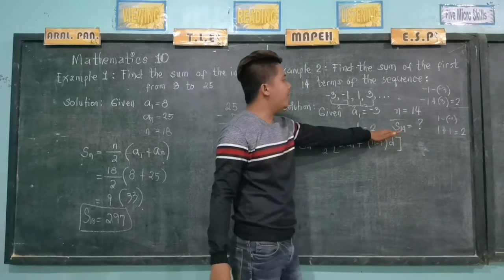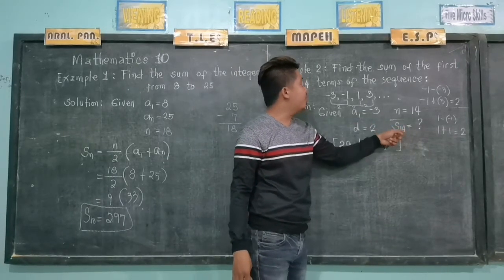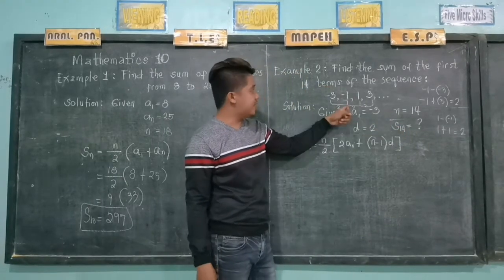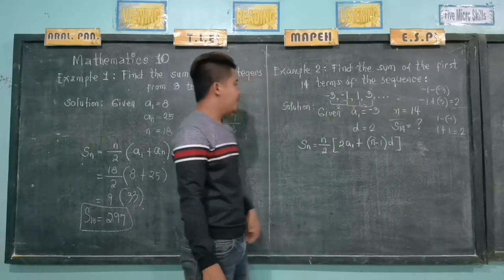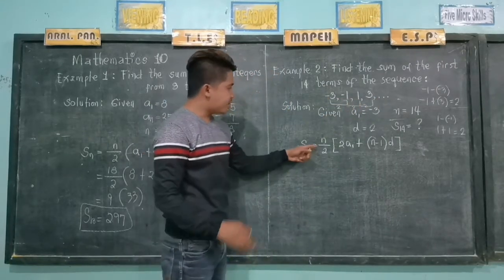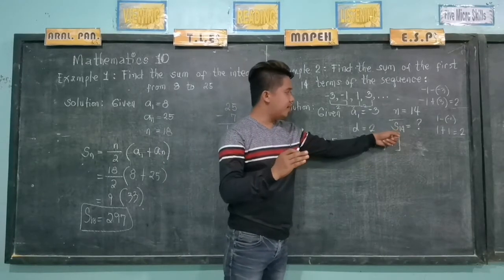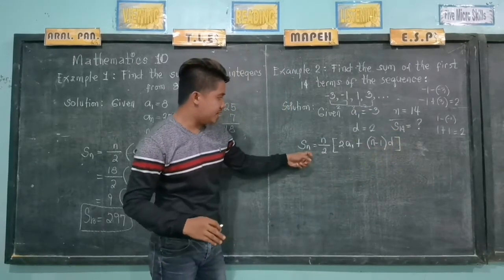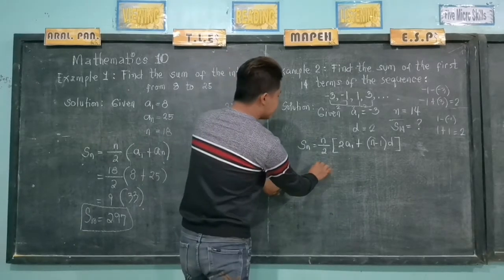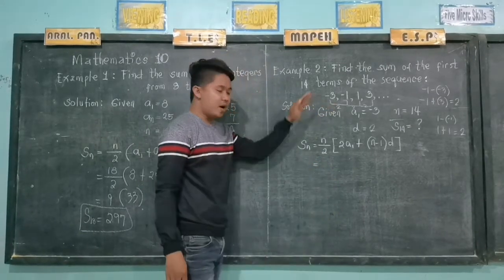And we're going to find the sum of the 14th terms of this sequence. We will use this formula, since the last term, the 14th term is not given.